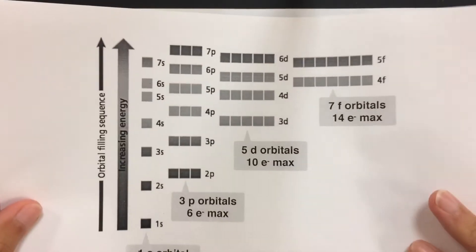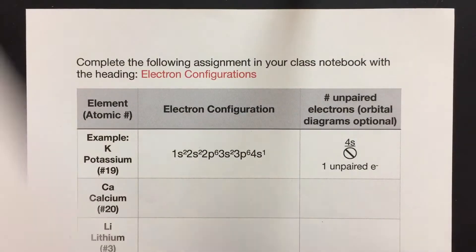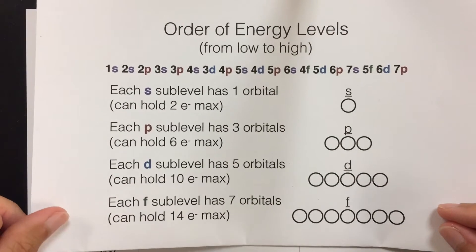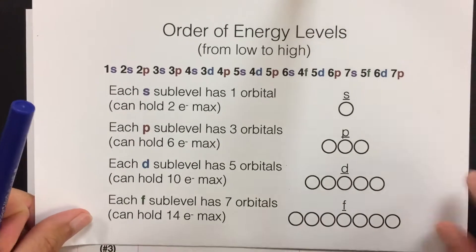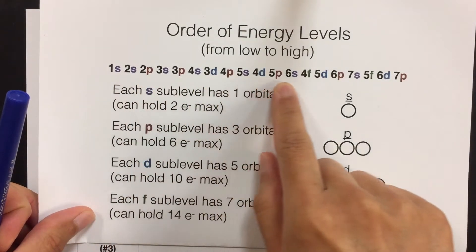You don't necessarily need this but I'll refer to it a little bit. This is probably the most important thing you'll need from your notes is the order of energy levels, so make sure you have that copied down, primarily this written out.